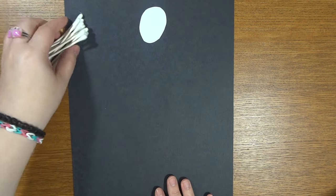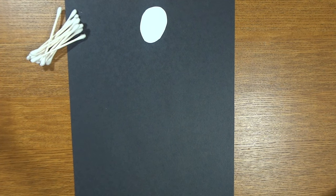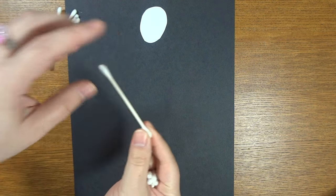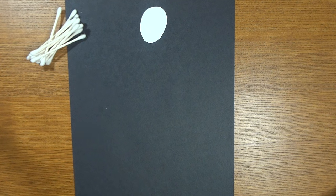You're also going to need seven Q-tips that you're going to cut in half. You're just going to take your Q-tip and literally chop it right in half. You're going to need seven of those, so you end up with 14 smaller pieces.